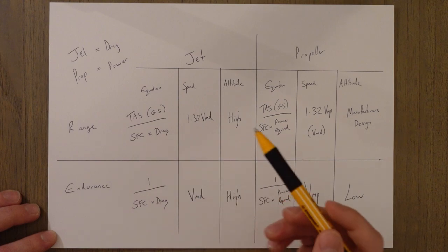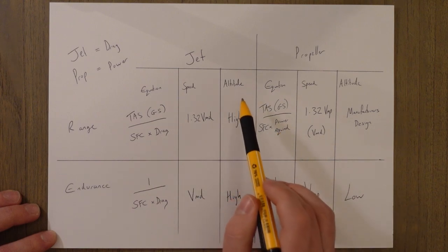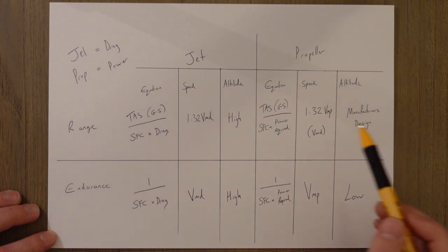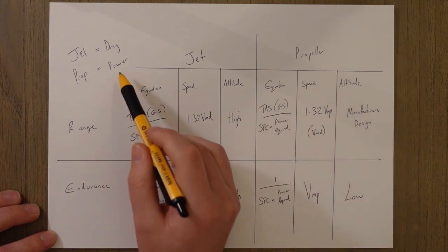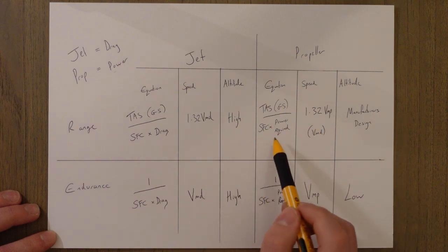The speed we need to fly is 1.32 Vmd, the tangent to the drag curve where our ratio of thrust to drag is at its maximum. The altitude that we get the best range is up high.